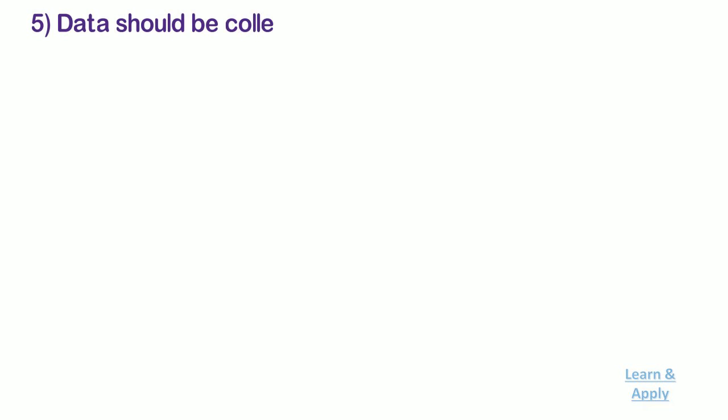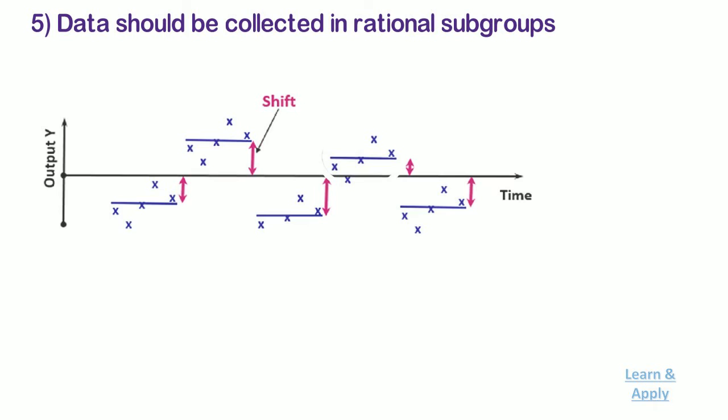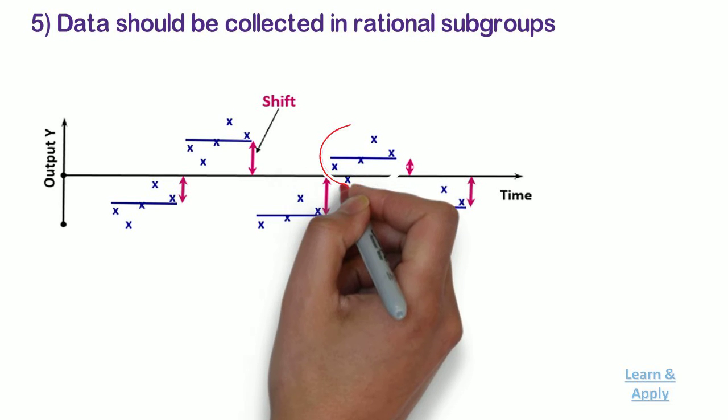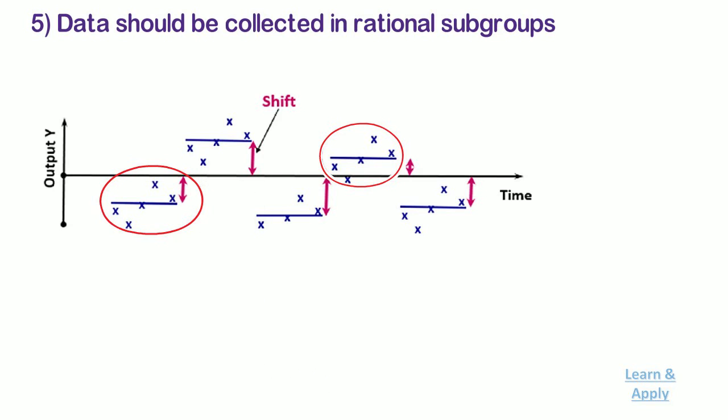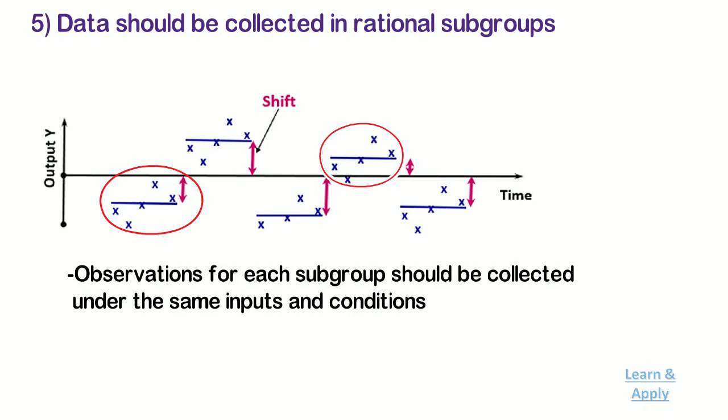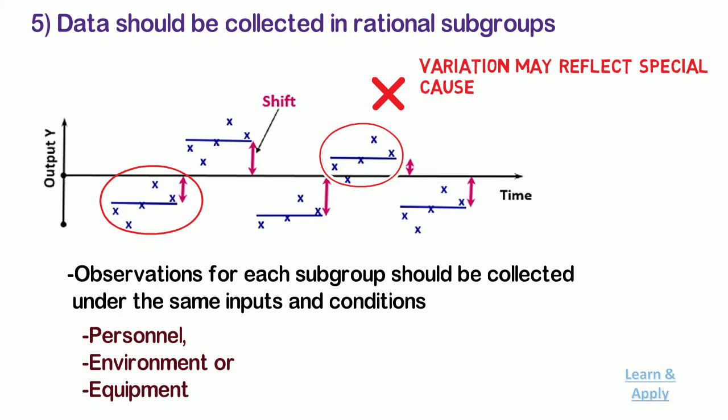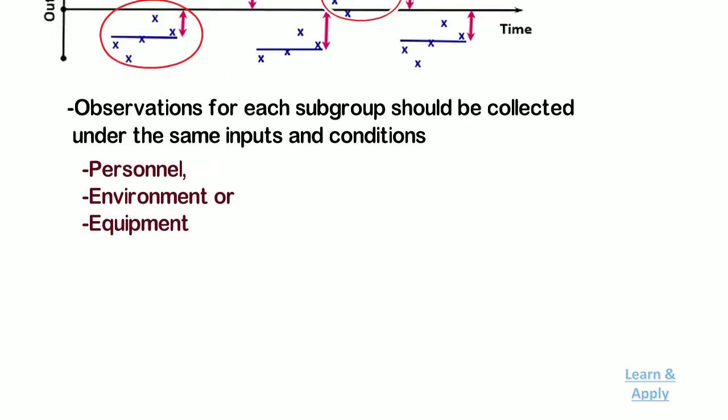Fifth, data should be collected in rational subgroups if possible. A rational subgroup is a small sample of similar items that are produced over a short period of time and that are representative of the process. Observations for each subgroup should be collected under the same inputs and conditions such as personnel, environment, or equipment. If you do not collect rational subgroups, the variation in the subgroups may reflect special causes rather than natural, inherent variation of the process.